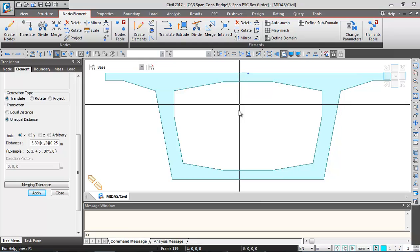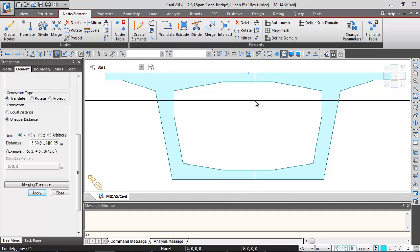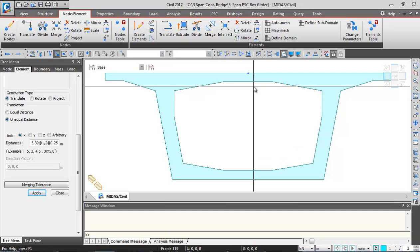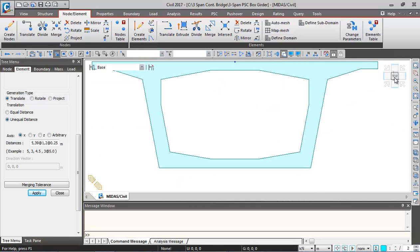Next, we'll generate nodes for the bearing top and bottom locations. We are modeling with respect to the center top of the box girder. From the bearing arrangement drawing, we need two nodes per bearing — one at the top, one at the bottom. We'll translate the support nodes down to the bearing locations. In the transverse direction, the translation distance is 1.9 meters.